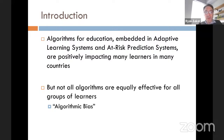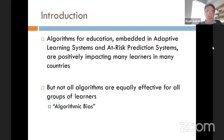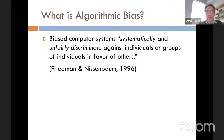But not all algorithms are equally effective for all groups of learners — that's what's called algorithmic bias in this domain. In a classic definition by Friedman and Nissenbaum, biased computer systems systematically and unfairly discriminate against certain individuals or groups in favor of others.